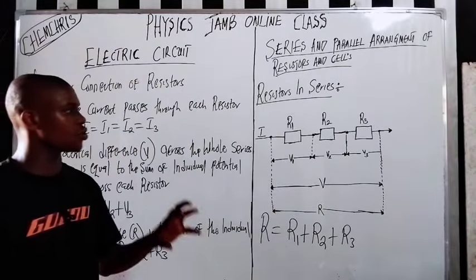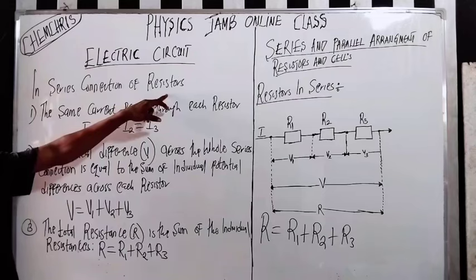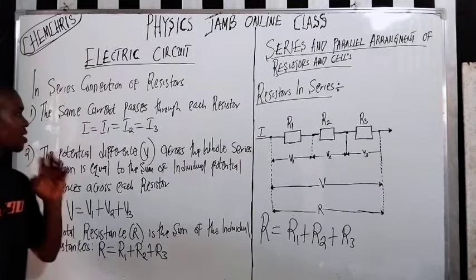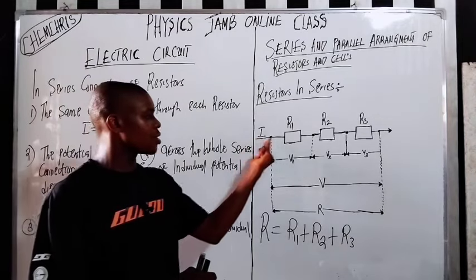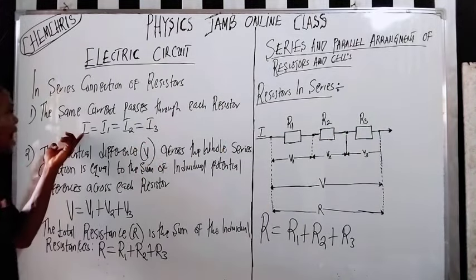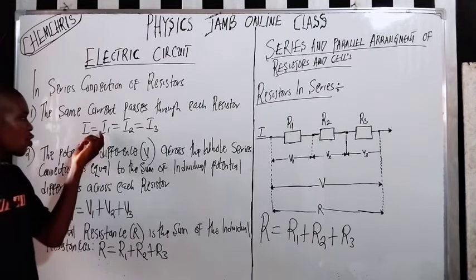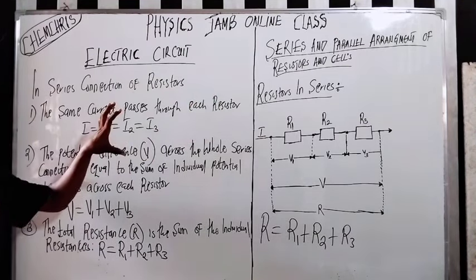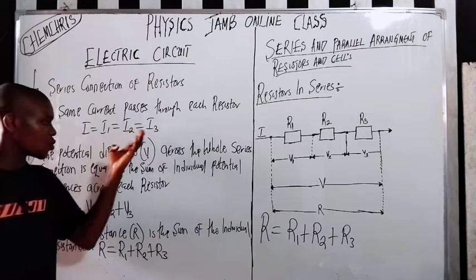Now there are some key things you need to understand when it comes to resistors in series. These are general properties of series connection that are very key. The first one is that the same current passes through each resistor. That is, the same current passes through resistor one, the same current passes through resistor two, and the same current passes through resistor three. So I equals I1 equals I2 equals I3. JAMB can ask about all these things in your exam.